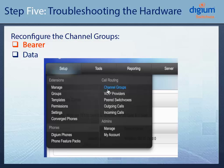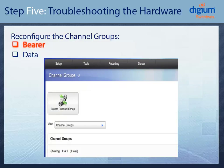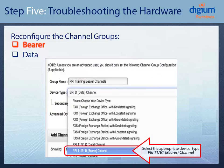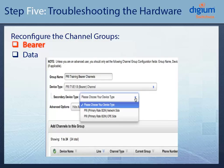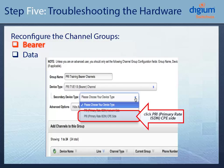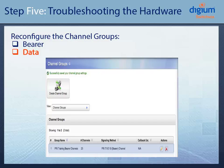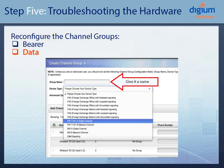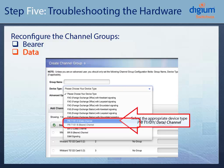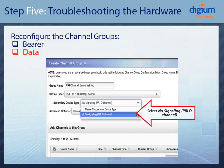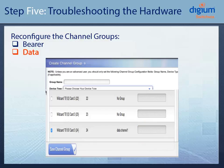Next, you are going to reconfigure your channel groups. Click on Setup, then select Channel Groups. From here, you will create both channel groups: the Bearer Channel Group and the Data Channel Group. Click on Create Channel Group, then give it a name. Select the device type, which would be PRI-T1-E1 Bearer Channel Group. Then select the secondary device type, which would be PRI-CPE side. Then select the channels to be assigned to this group and click Save Channel Group. Next, you will set up the Data Channel Group. Click on Create Channel Group, give it a name, then select PRI-T1-E1 Data Channel. Then select the secondary device type, which is No Signaling. Select the channel and click Save Channel Group.